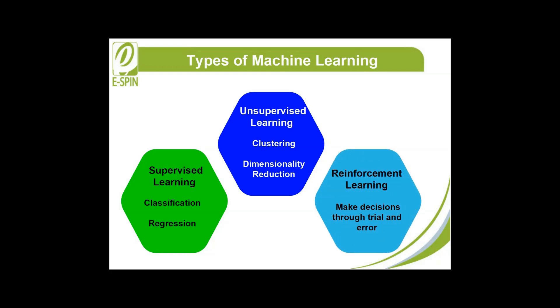Reinforcement learning focuses on training agents to make decisions through trial and error, receiving rewards or penalties based on their actions.